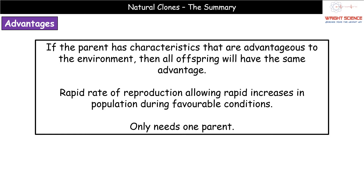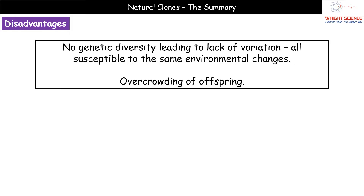Secondly, we only need one parent, which negates the need to find a mate and avoids the problems of sexual reproduction. And because we're only looking at one parent, we get a rapid rate of reproduction. This is very beneficial — if conditions suddenly become favourable, for example after a long drought when moisture returns, organisms can reproduce very quickly, giving a rapid population increase.